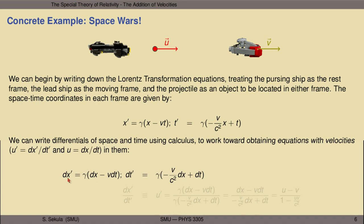The differential of space in the moving frame, dx', is equal to gamma times the quantity dx minus v dt. The differential of time in the moving frame is equal to gamma times the quantity negative v over c squared dx plus dt. We can take the ratio of dx' over dt', and this allows us to get the velocity u' of the projectile as observed in the moving frame. Substituting in our differentials for dx' and dt', we arrive at a rather unpleasant-looking equation, but one of the nice things is that the leading gamma factors — the 1 over square root of 1 minus v squared over c squared terms — cancel out in both the numerator and the denominator.